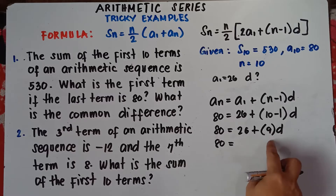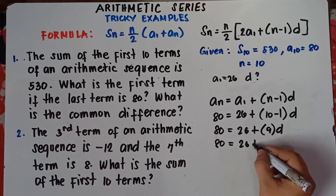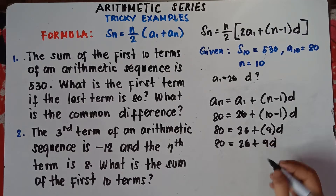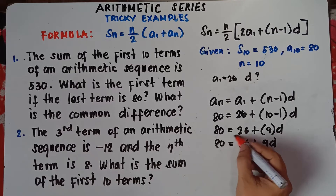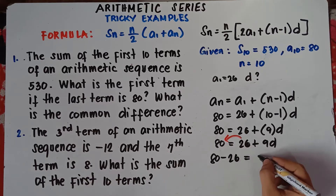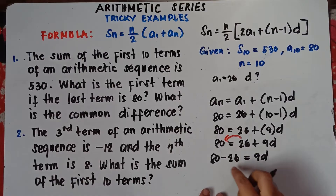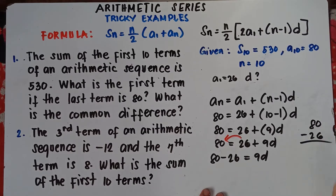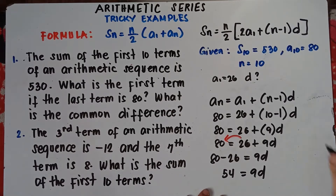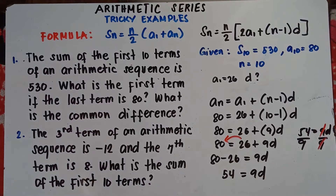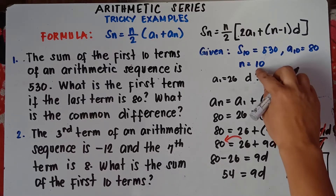Transpose 26 from right to left: 80 minus 26 equals 9D. Subtract: 80 minus 26 equals 54, so 54 equals 9D. Divide both sides by 9: D equals 6. So our common difference is 6.